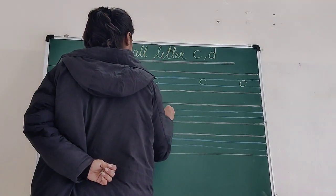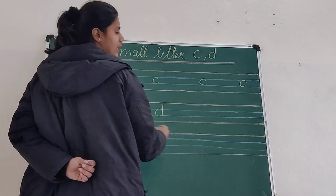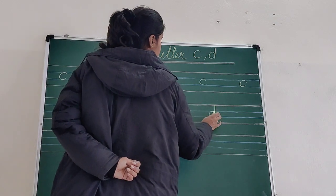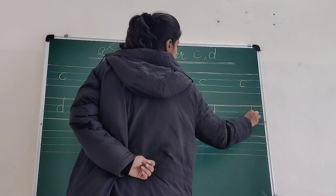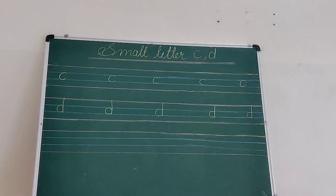Again, one curve and one standing line. Make C and then one standing line. C and one standing line. Okay students?